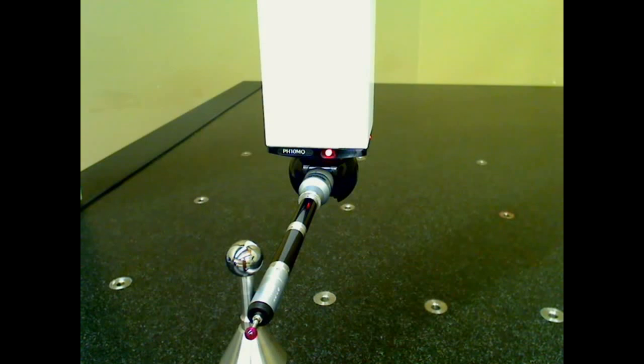Let's look at a quick way to verify the squareness between the PH10MQ's head and the CMM's y-axis. The first thing you want to do is put a longer probe extension on there so that we can have something to gauge the squareness against.